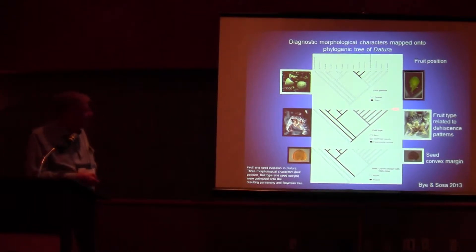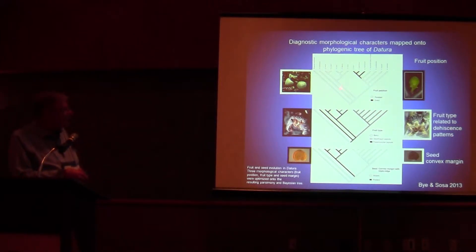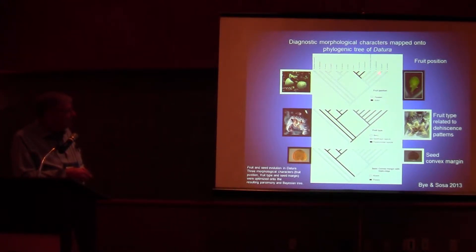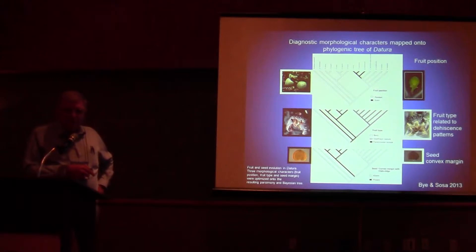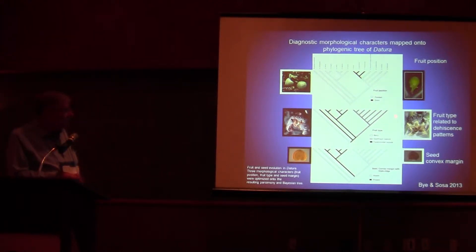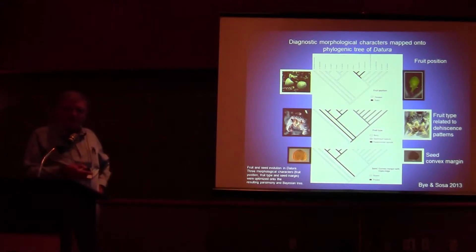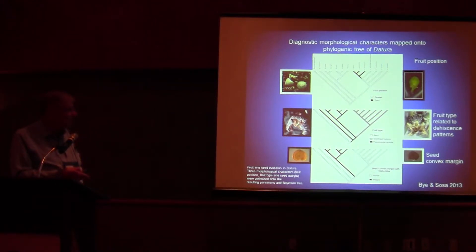If we map morphological characters onto the tree, fruit position and flower characters were very important. We can see the Datura group here, one Dutra group, and another Dutra group — Rhettopaus — but the morphological characters really don't line up with the molecular data. Fruit position: not at all. Fruit types: even worse. But when we look at seeds, they match up with three sections, and seed anatomy morphology also gives three sections, going back to Bernhardt's classification.